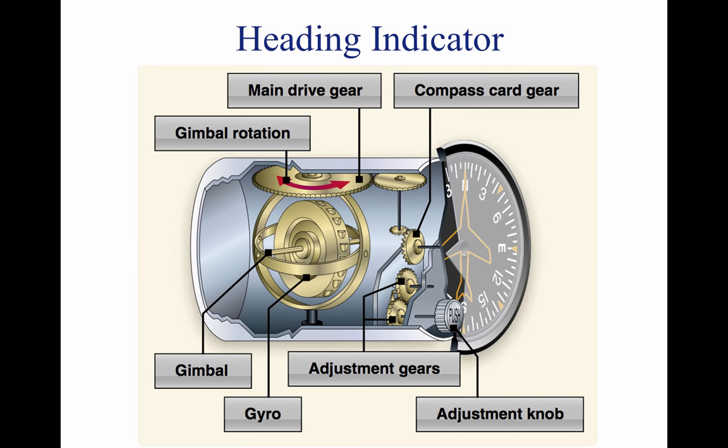The Heading Indicator is fundamentally a mechanical instrument designed to facilitate the use of the magnetic compass. Errors in the magnetic compass are numerous, making straight flight and precision turns to headings difficult to accomplish, particularly in turbulent air. A heading indicator, however, is not affected by the forces that make the magnetic compass difficult to interpret.